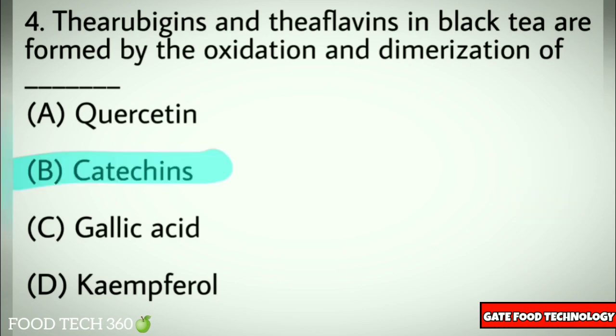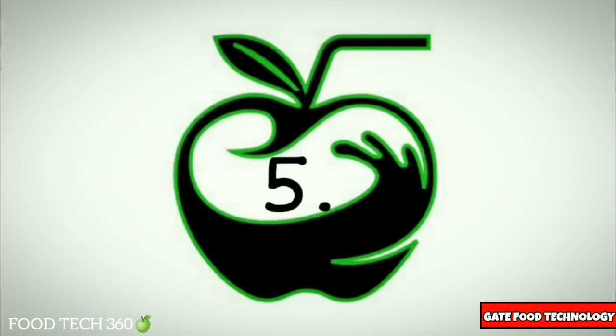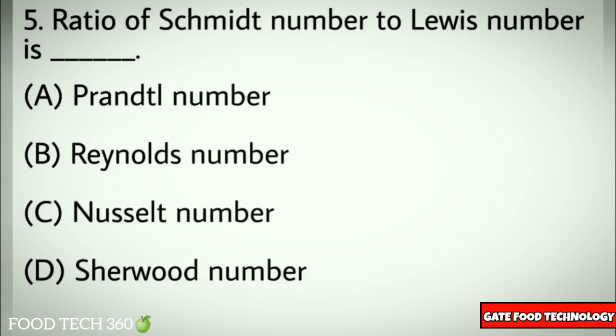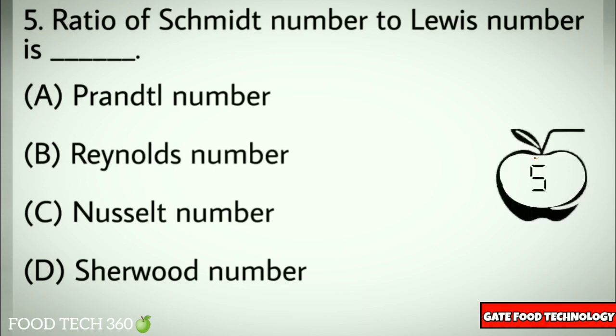Question number five: Ratio of Schmidt number to Lewis number is — options: A) Prandtl number, B) Reynolds number, C) Nusselt number, D) Sherwood number. Correct answer: A) Prandtl number.